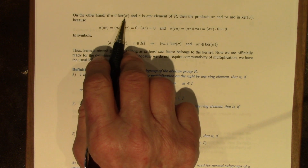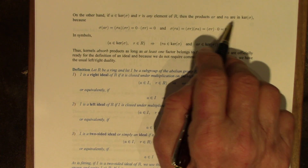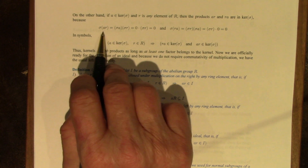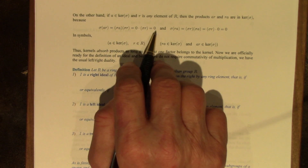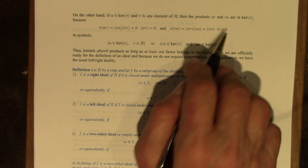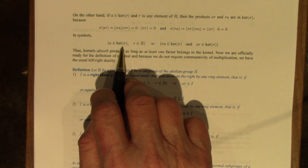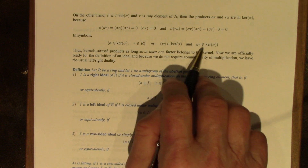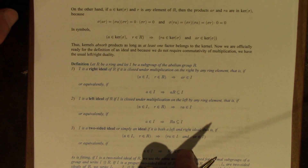On the other hand, if we take an element A in the kernel of sigma and R is any element of the ring, then the products AR and RA do belong to the kernel. The kernel has this superclosure property under multiplication. Sigma of AR equals sigma of A times sigma of R, but sigma of A is zero, so we get zero — and same thing the other way around. So this is precisely the property I described earlier as the definition of an ideal: if A is in the kernel of sigma and R is any ring element, then the products in either order belong to the kernel. So kernels have this superclosure absorption property.